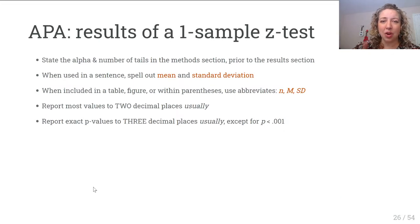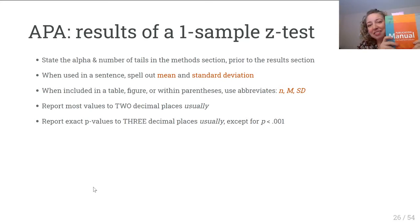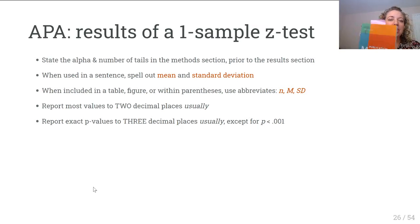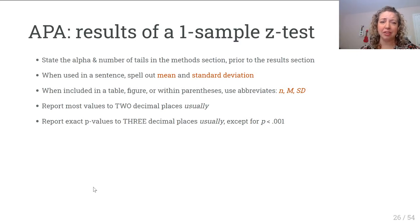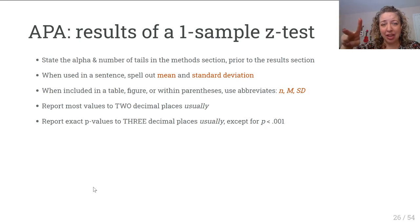Before we hit the example, I want to go over some bullet points on writing up your results APA style. We are on the 7th edition of APA's manual. It says we should always state your alpha significance level and the number of tests. That information belongs in your methods section. In most theses, dissertations, and manuscripts, we usually have a methods section that lays out what tests we're running, what our significance level alpha is, and how many tails we're using.